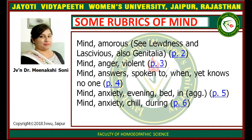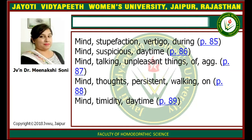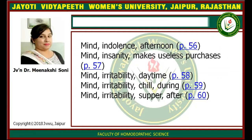Some rubrics of the mind section: Mind — Anger, violent (pages 2–3 of the mind section, page numbers 234–56). Mind — Answers spoken to, yet knows no one. Mind — Anxiety, evening in bed. Mind — Anxiety, chill during. Mind — Stupefaction. Mind — Suspicious, daytime. Mind — Talking, unpleasant things, aggravation. Mind — Thoughts, persistent, while walking. Mind — Timidity, daytime.